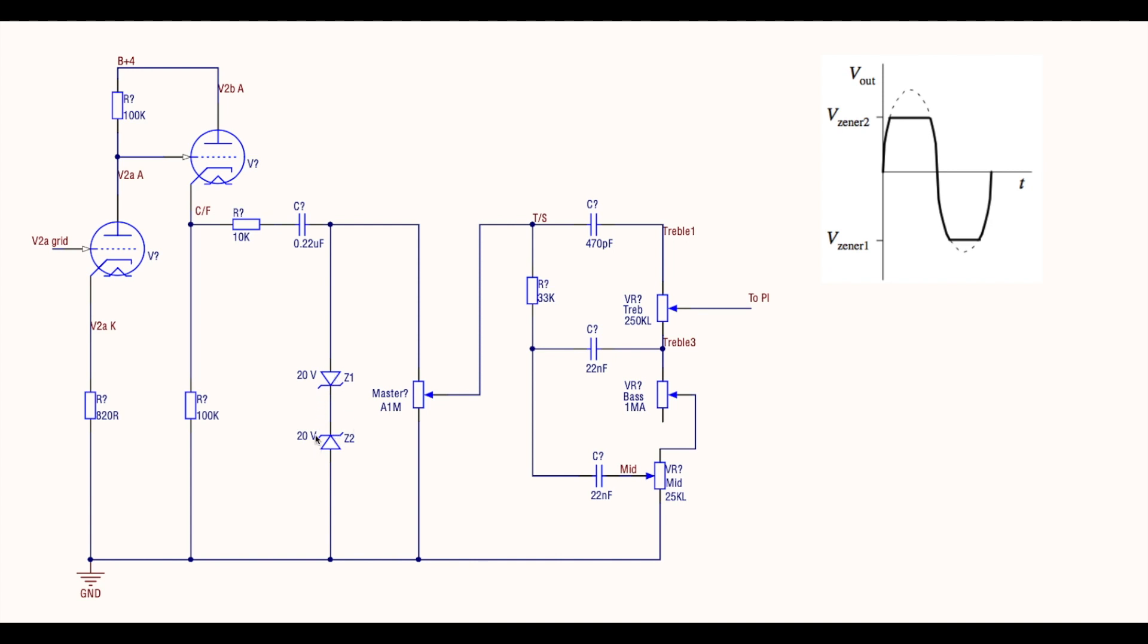So to try and explain what these Zeners are doing from a theory perspective, I've got this little diagram over here which is showing a sine wave and how the Zener diodes clip it and clamp it at a certain defined point. Now, the reason this happens is because you have to think about what a Zener diode does and how it works.